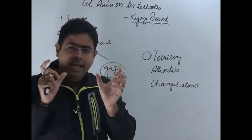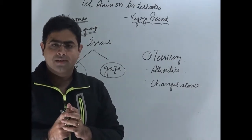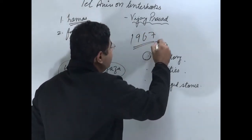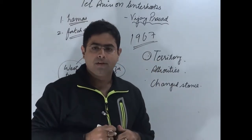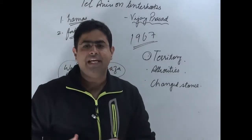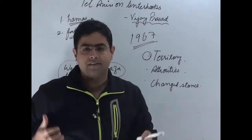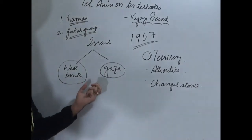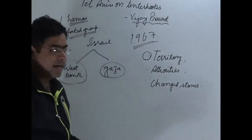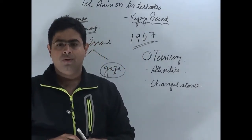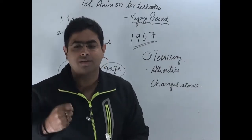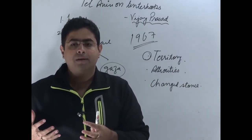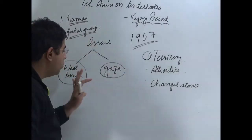There is an important date to understand in this conflict: 1967. This is a very important year for understanding how things took a bloody turn. 1967 was the year when Israel took over these two relics of Palestine — West Bank and Gaza — and began to hegemonize these two land masses. This hegemonization took the form of setting up Israeli settlements in these two lands.